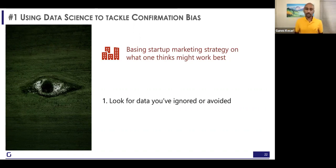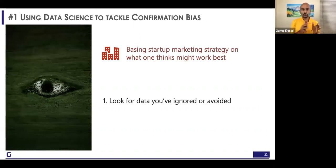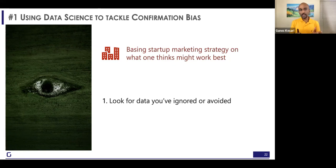Step number one: look for data that you either don't value and hence you ignore, or — more dangerously — data you have avoided because it is uncomfortable. Getting a 360-degree view. If you want to move away from confirming what you already know, you'll have to look in new places, look for new data, and make sure you have spread the net wide open.